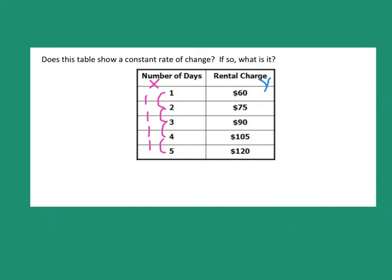Then if I look at the y values and I'm going down this list, I either recognize it or I will make a subtraction problem. But from 60 to 75, that's 15. From 75 to 90, that's also 15. From 90 to 105, that's 15. And 105 to 120, it's also 15.